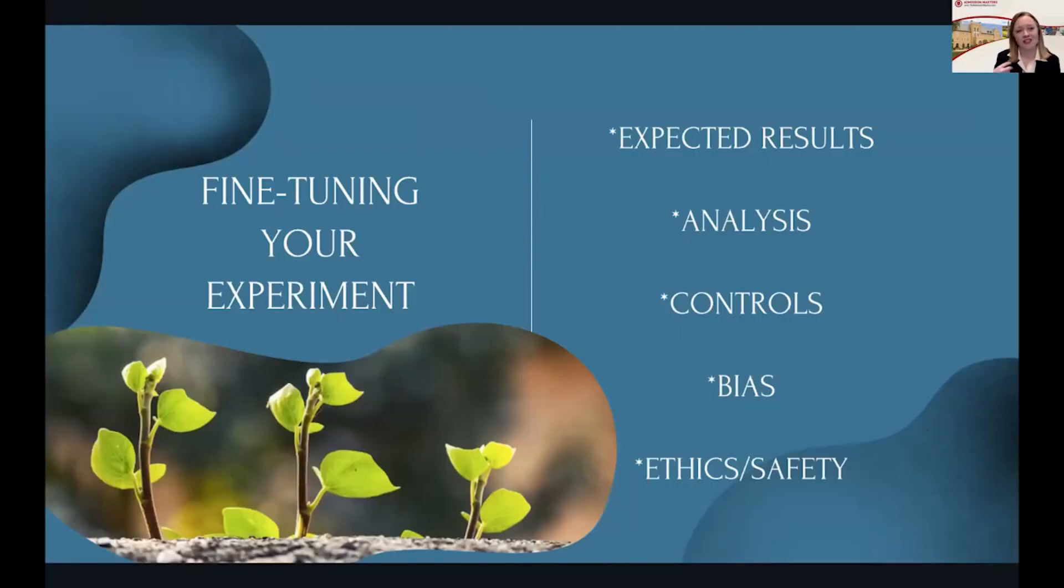You need to definitively or at least convincingly demonstrate cause and effect. You need to have the proper controls. You also want to think about bias. It's very easy to introduce bias on accident into your experiment.